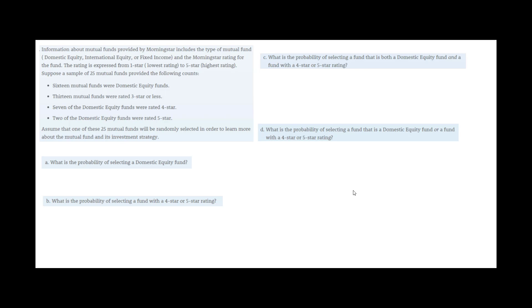So we want to know what's the probability of selecting a domestic equity fund. We can see right here there were 16, so this would equal 16 out of 25, or putting that in your calculator, 0.64.